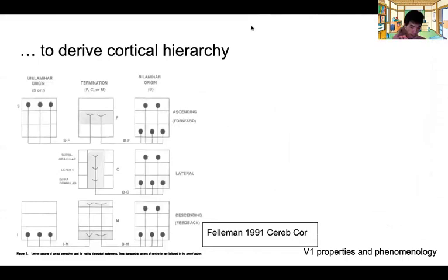This is a very important concept in vision science called cortical hierarchy. It's proposed by Felleman and Van Essen roughly 30 years ago. What these anatomical researchers found was that layer 4 is usually considered the middle layer, and then layer 2 and 3 is upper layer, and 5 and 6 is considered lower layer.